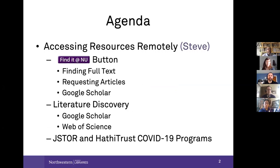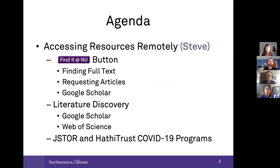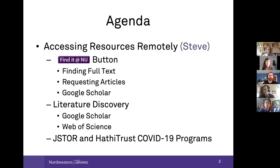Then I'm going to go into accessing resources remotely. We'll go into the details of the 'Find It at NU' button, which may seem basic, but there are details that can come in handy when you're working late at night and you can't chat with anyone or get a quick email answer. For literature discovery, I'd like to do demos with Google Scholar and Web of Science that go beyond the obvious. I'll also cover the JSTOR and HathiTrust COVID-19 programs — they're offering lots of free resources that they don't normally offer, and you'll have access to them all this quarter.